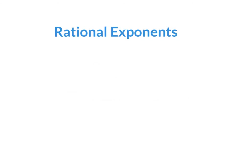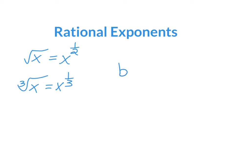You might remember earlier in this unit I talked about how the square root is really the same thing as x to the power of 1/2. We also learned about cube roots — that would be x to the power of 1/3. The official way to write this: b to the power of 1/n equals the nth root of b. The denominator of the fraction is the root of the radical.